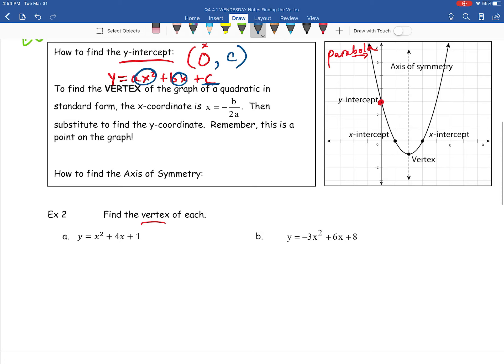For example, if that c value was like a 3, then it would be 0,3. Now, to find out the vertex, this is where a lot more of the math starts to occur. In order to find your x value, when it's in standard form, you've got to keep that in mind.